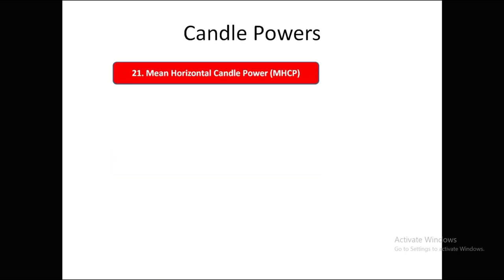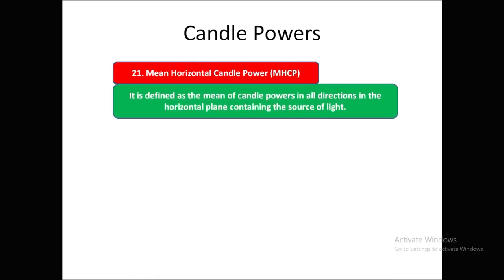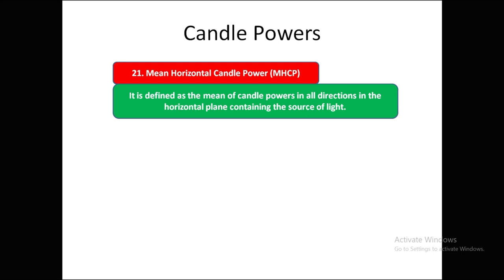Mean horizontal candle power (MHCP) is the mean candle power in all directions in the horizontal plane containing the source of light. It is limited only to the horizontal plane.